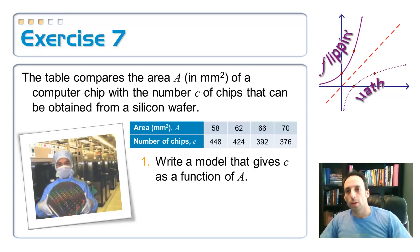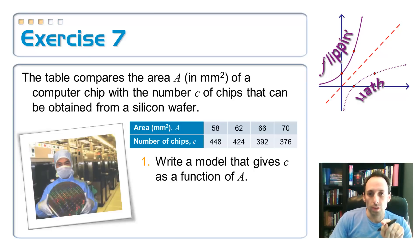So this table shows or compares the area of a computer chip and the number of chips that can be cut from a big silicone wafer. So, you can see that, a guy in a little clean suit there and he's holding the thing. Looks like it's got rainbow colors and it's real pretty. Anyway, so here is the area of a chip and the number of chips they can cut from that wafer.